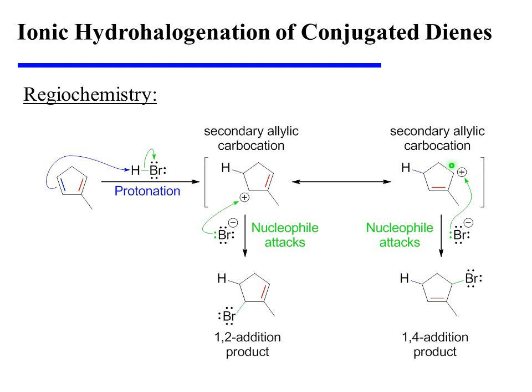This is not as stable as the carbocation that came from protonation of the red pi bond, because in that instance the carbocation was spread over a tertiary and a secondary center. Hence, this is a higher energy resonance hybrid, and we would expect it to lead to minor products.